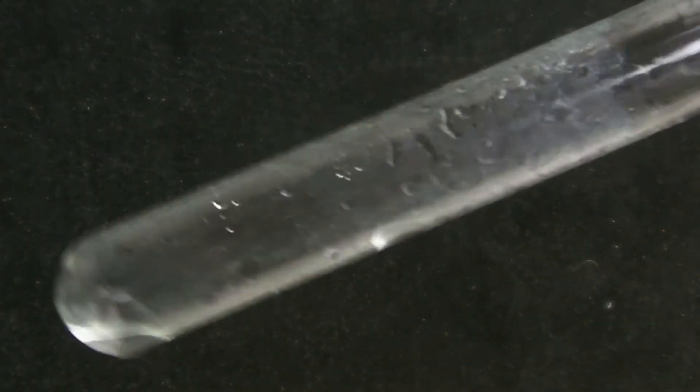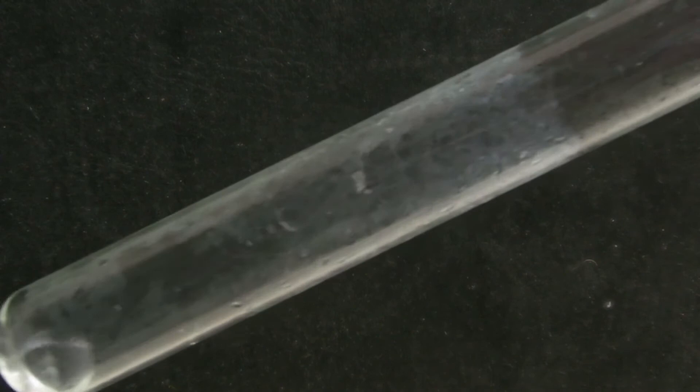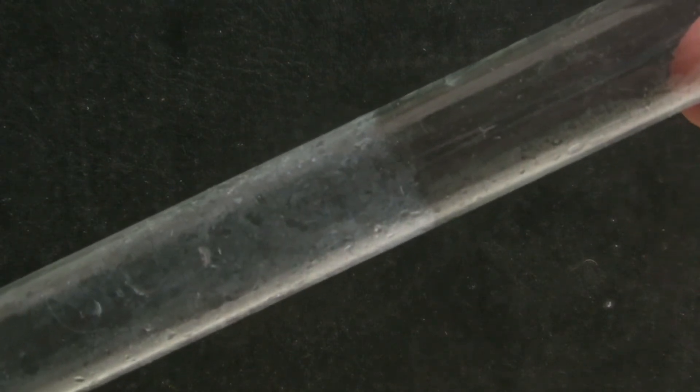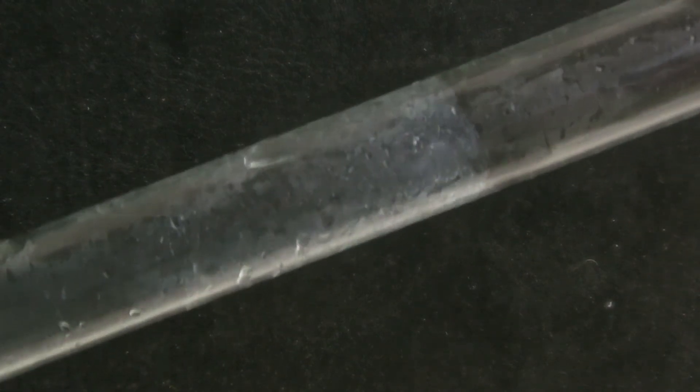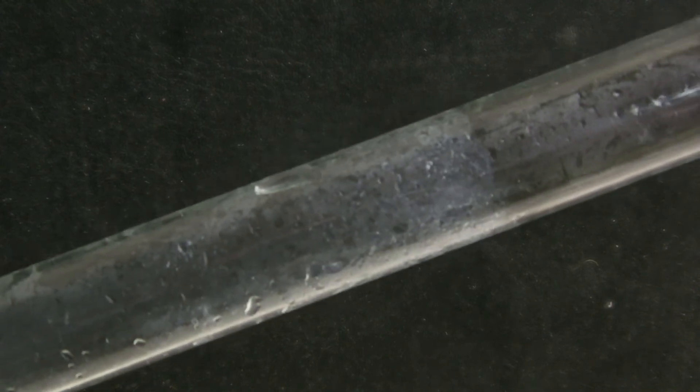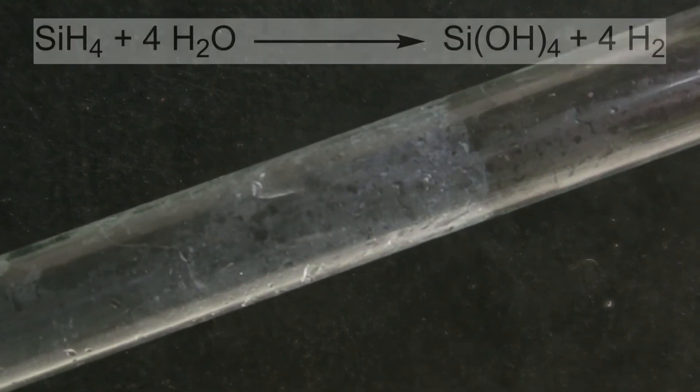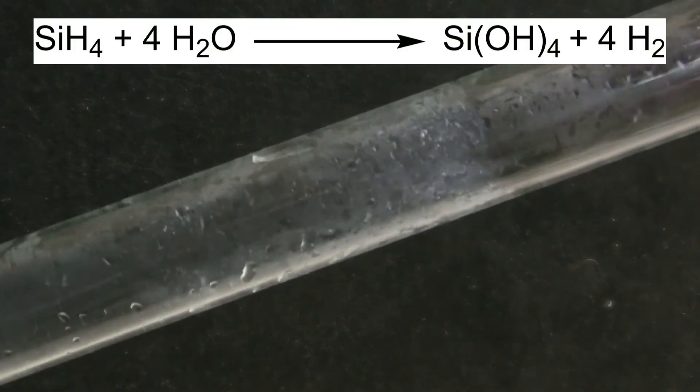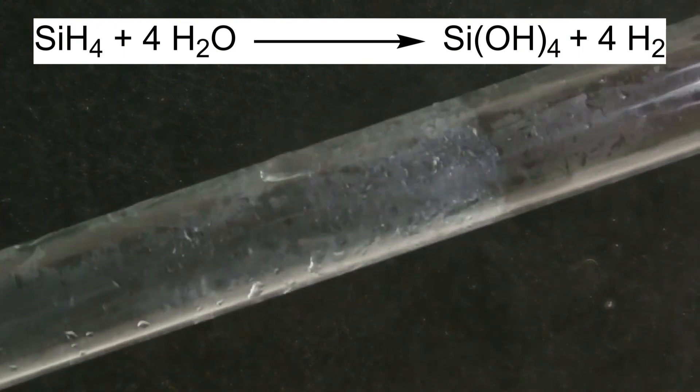The test tube had a white residue on the inside which can be explained in two ways. One possibility is that the dissolved oxygen in the water did react with the monosilane gas. The second one would be that the silane had reacted with the water itself to form silicylic acid.